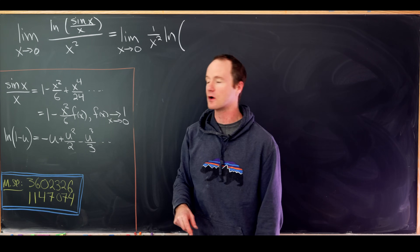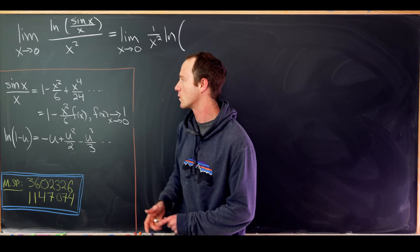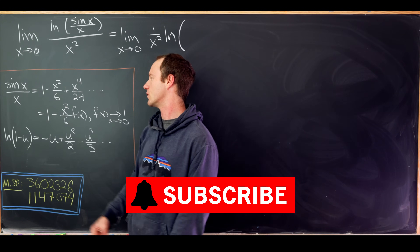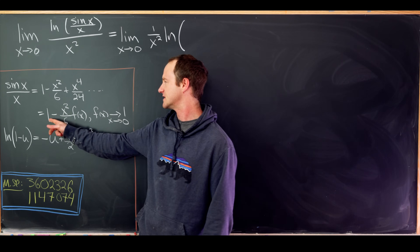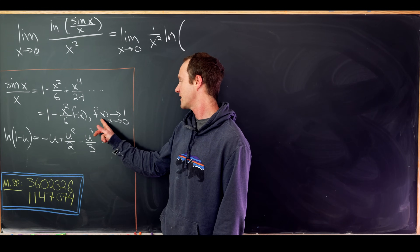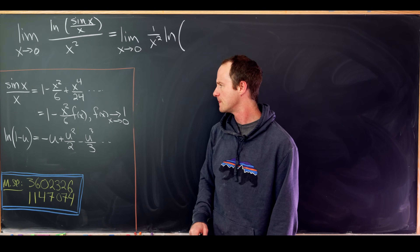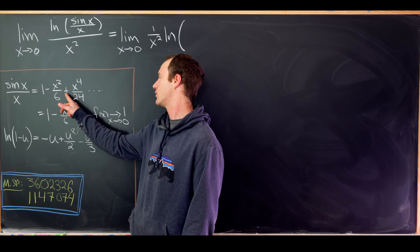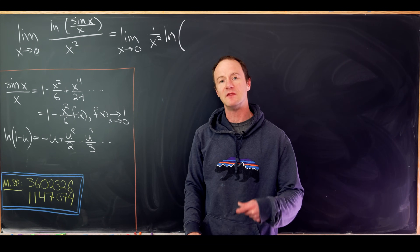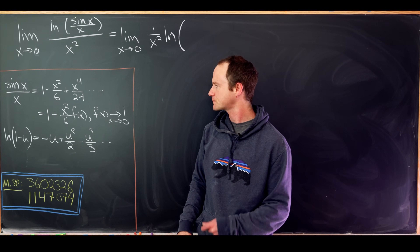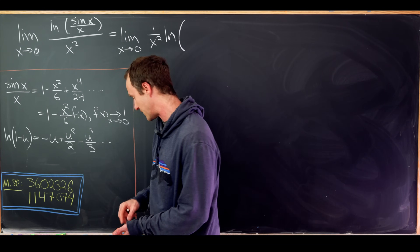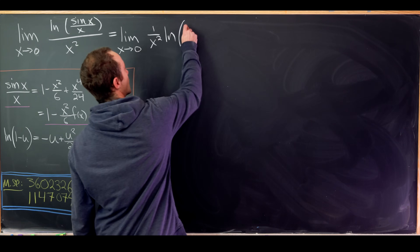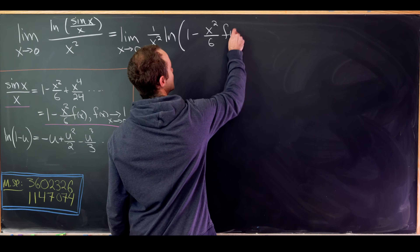The Maclaurin expansion of sin(x)/x is 1 − x²/6 + x⁴/24 − ⋯. We can factor out and group the remaining terms after the 1, writing this as 1 − (x²/6)·f(x), where f(x) approaches 1 as x approaches zero, since all remaining terms contain powers of x. We substitute this expansion in place of sin(x)/x.